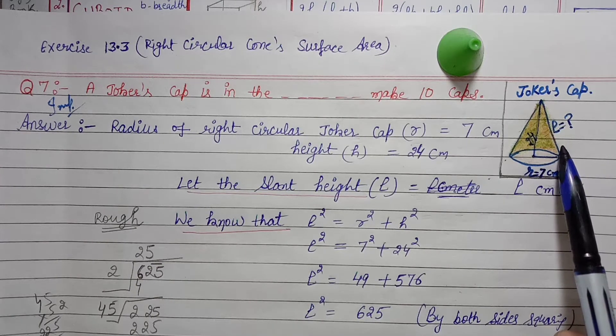We need to make 10 caps, so multiply by 10. Very simple question. Therefore, area of sheet required - we need to write this. Therefore, area of sheet required to make 10 such caps is equal to 10 × 550 cm².